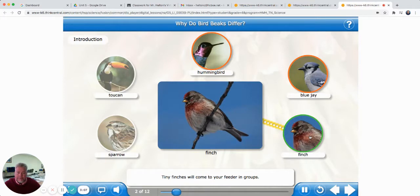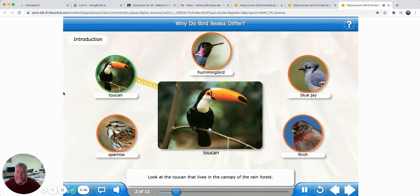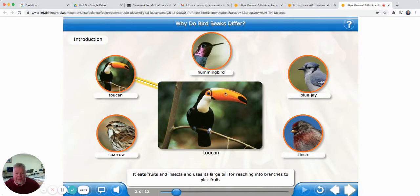Tiny finches will come to your feeder in groups. They love thistle seed and sunflower seeds. Sparrows are social birds. They will often nest under the eaves of houses. They love to feed on insects, berries, and seeds in gardens. They will eat most seeds and breadcrumbs from your feeder. Look at the toucan that lives in the canopy of the rainforest. It eats fruits and insects and uses its large bill for reaching into branches to pick fruit. He's got a big old bill, doesn't he? Look how big that thing is.